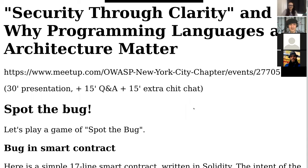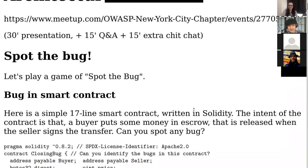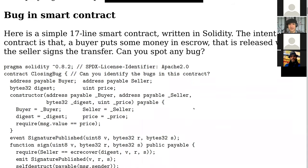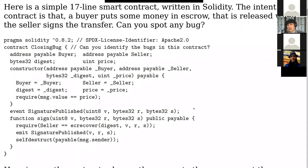Security through clarity. First, we're going to play a game of 'spot the bug.' Here is a 17-line smart contract written in Solidity. Before you try to spot the bug, let me explain what the contract is meant to be. The contract is meant to let a buyer and a seller close a sale, at the end of which the seller must sign a document — this document may release a legal document, a transaction on another blockchain, or whatever. The seller won't sign until the buyer gives him the money, but the buyer doesn't want to give the money until he has the signature. So we're going to do an atomic transaction — a closing.